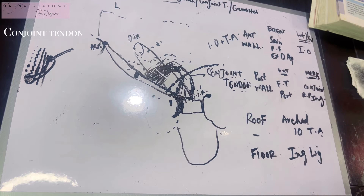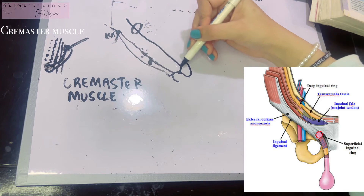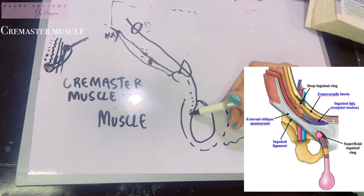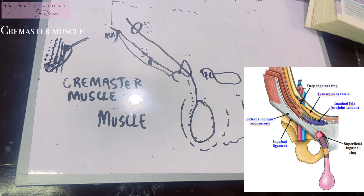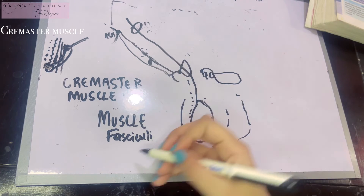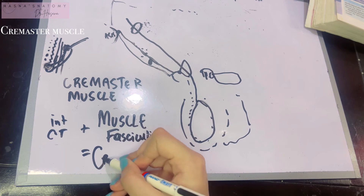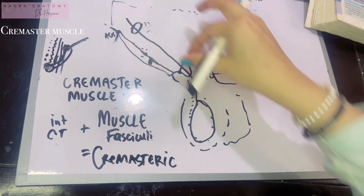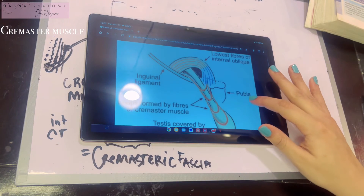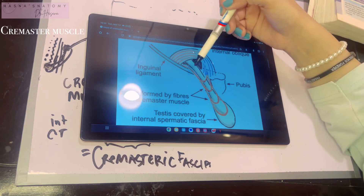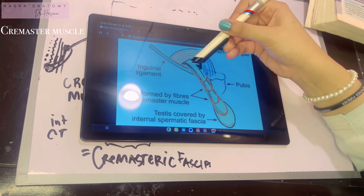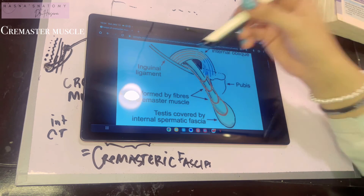The cremaster muscle covers the spermatic cord as it passes through the inguinal canal down to the testes. The cremaster muscle consists of muscle fasciculi embedded in connective tissue. The muscle fasciculi plus the intervening connective tissue form what is called the cremasteric fascia, which completely surrounds the spermatic cord all the way to the testes. The muscle fasciculi are divided into superficial loops and deep loops.